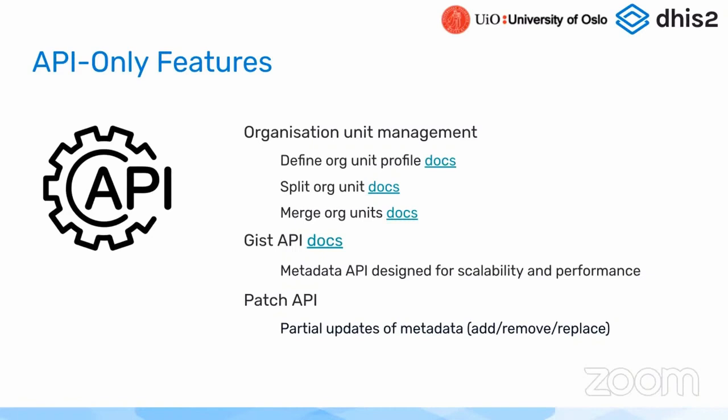This doesn't happen very often, but it does happen. And it has been problematic in DHIS2 since org units are linked to so many things — we counted 27 associations from org units to other entities in DHIS2.